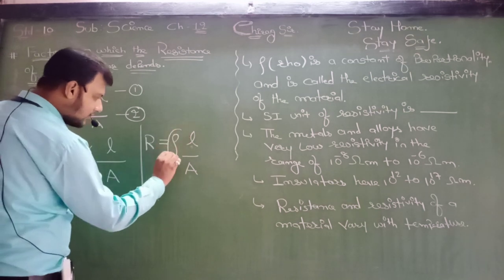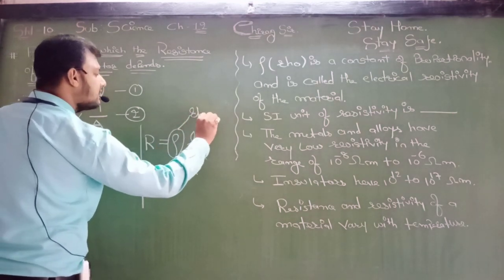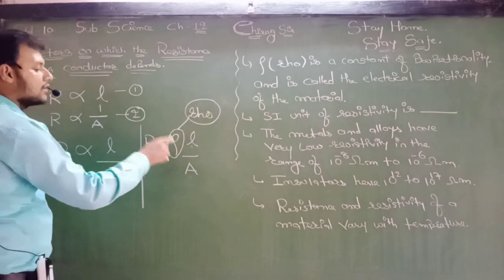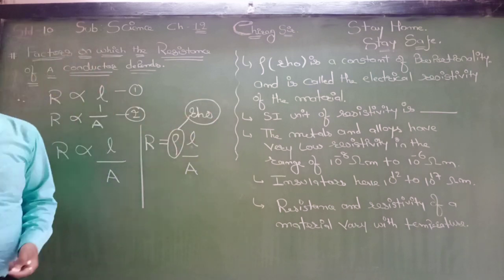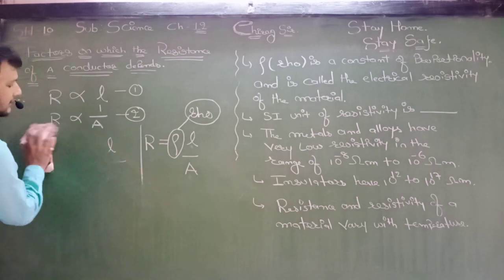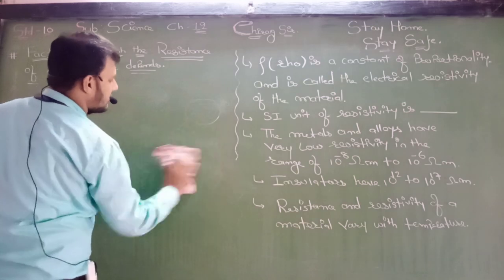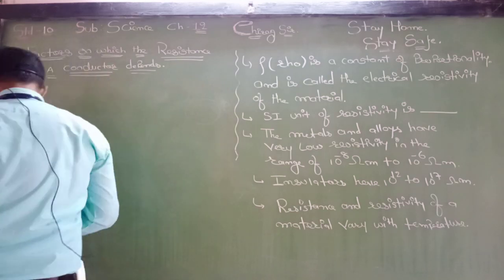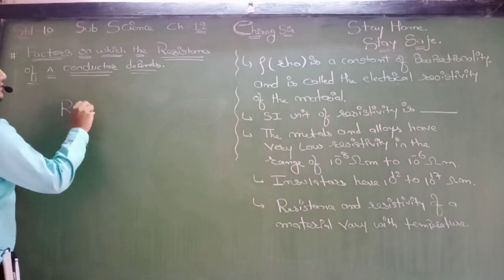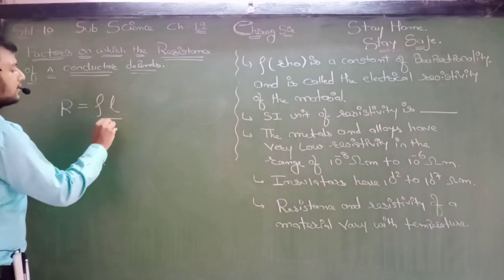This is R. This is rho — rho, rho, rho. This is the constant. So our formula has become: R equals rho times L upon A.